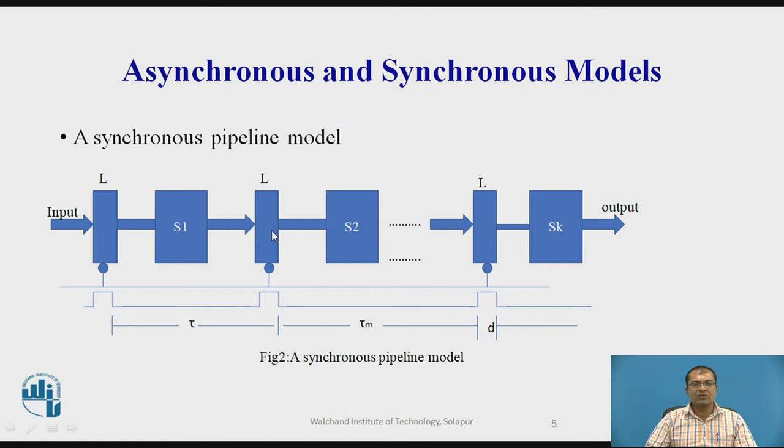So it will pick the data from its previous stage and it will store here. And it is going to forward to next stage as soon as it senses the clock pulse. Then the signal is fed to latches and the data present in respect to latch will be forwarded to its next stage.